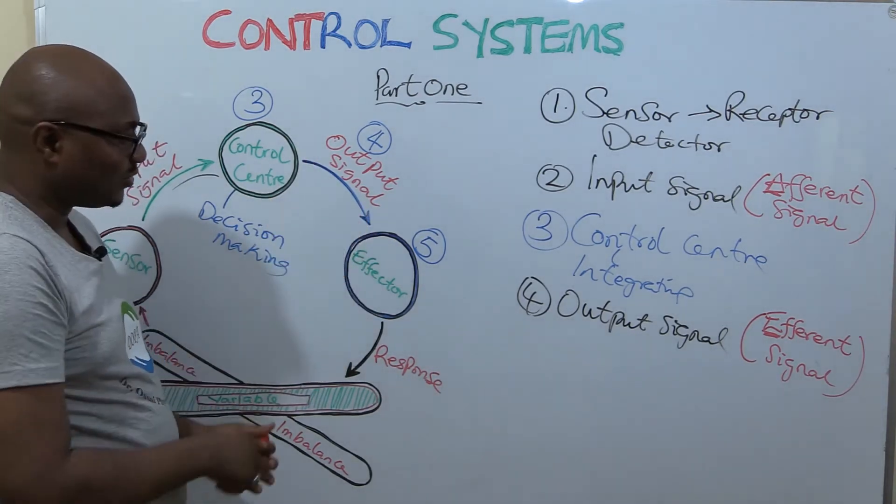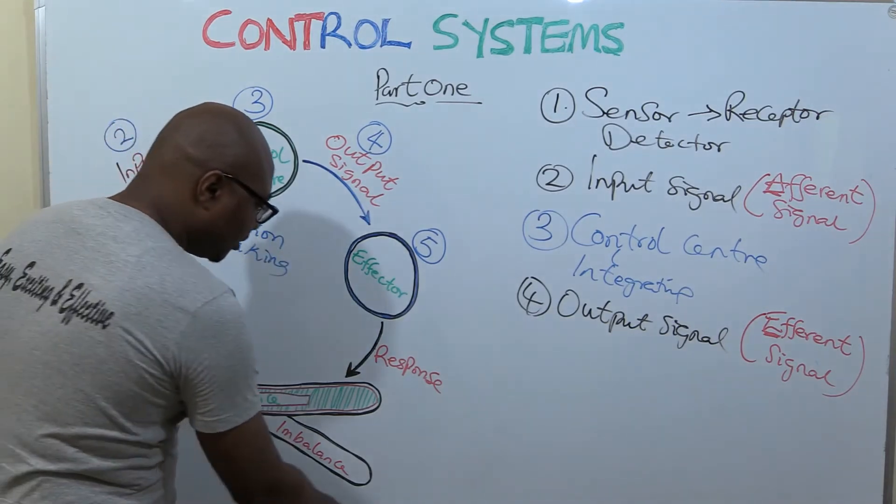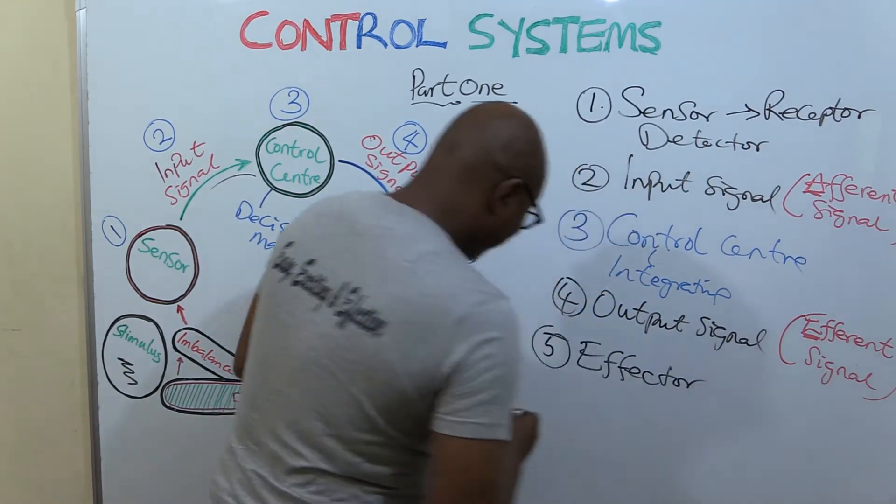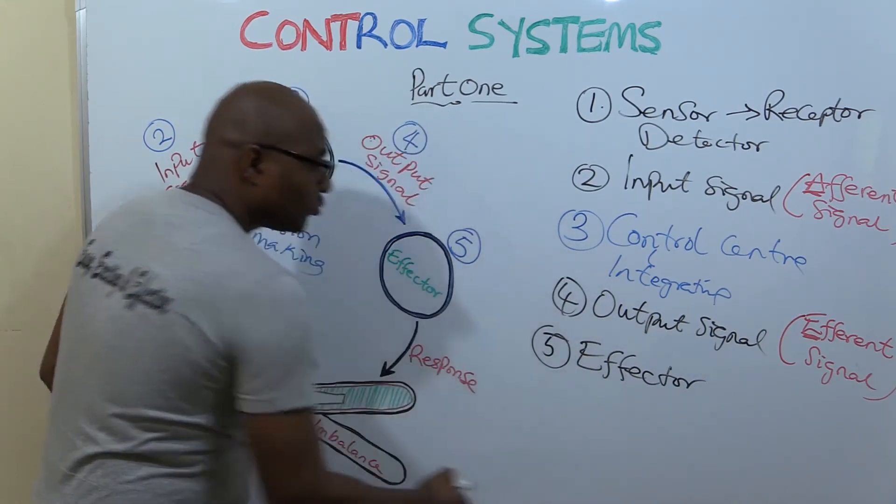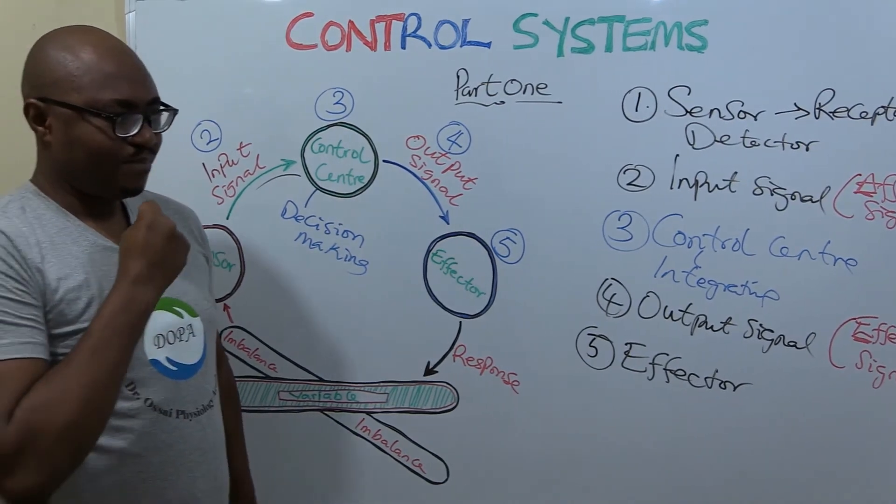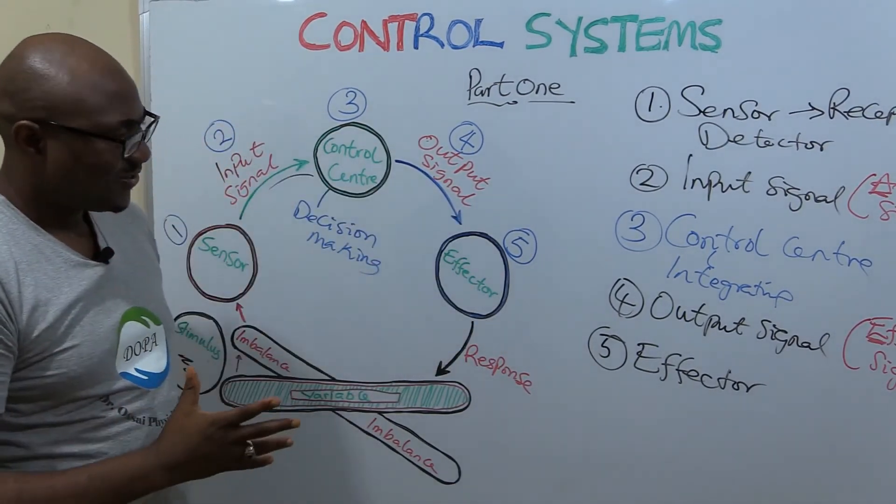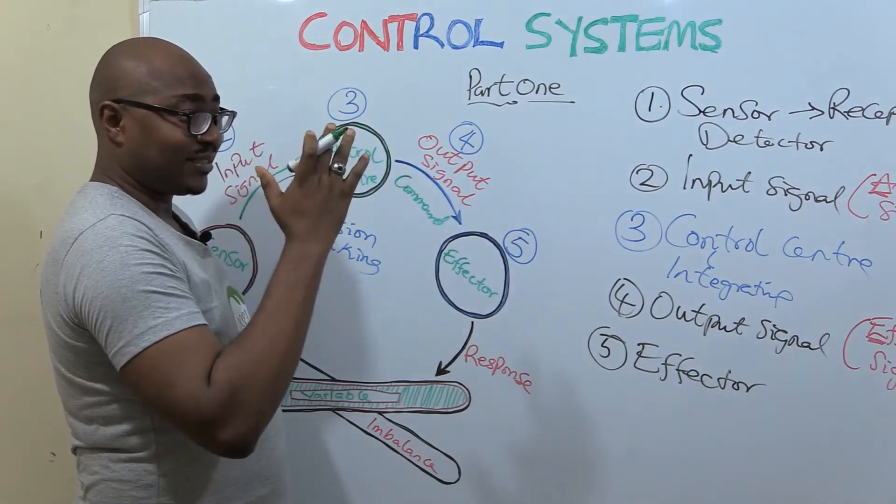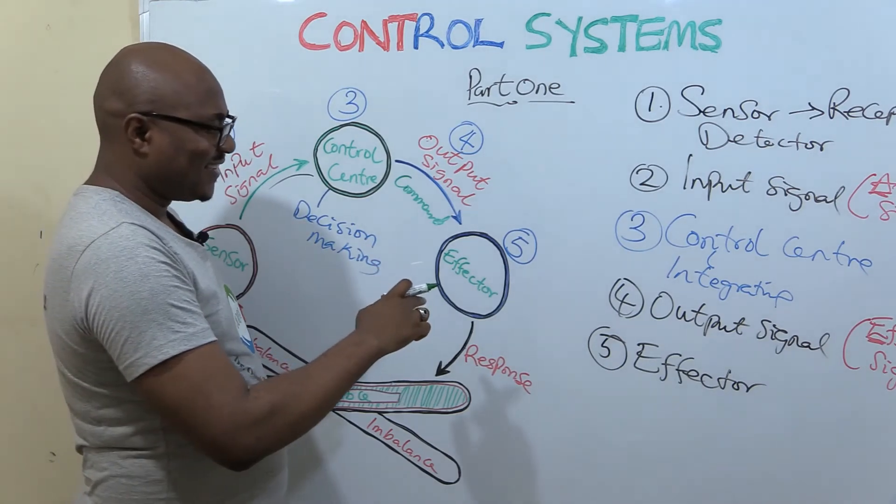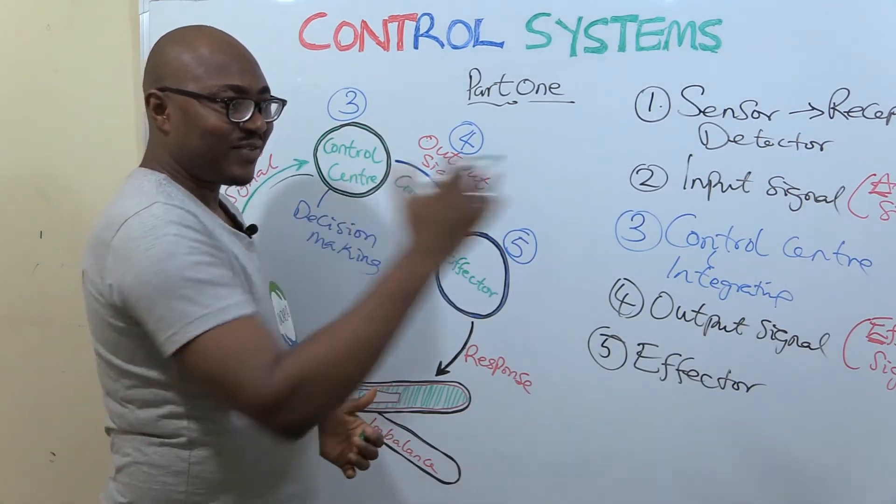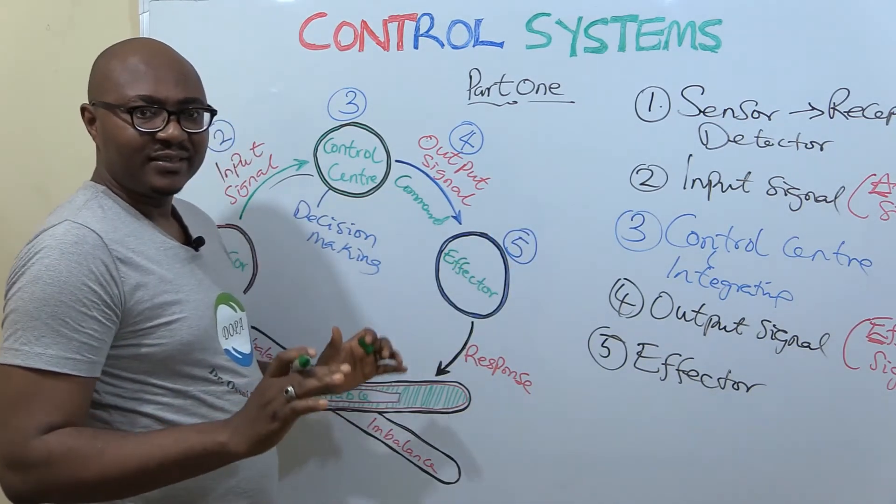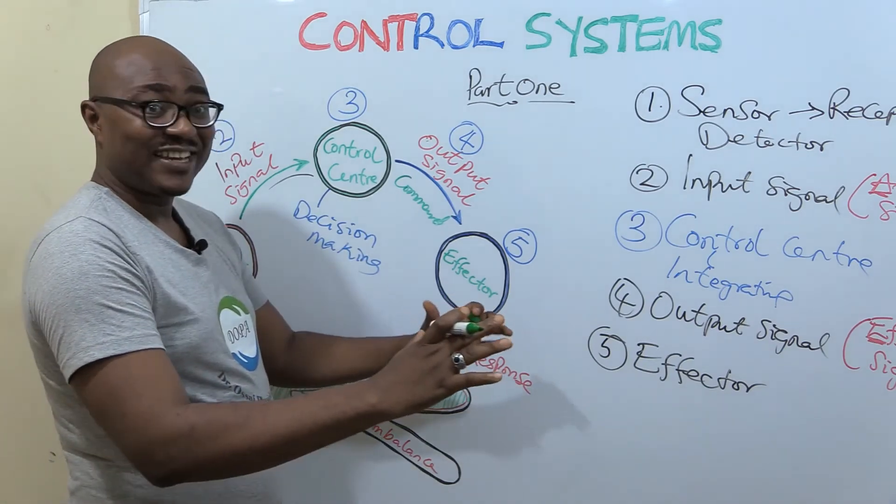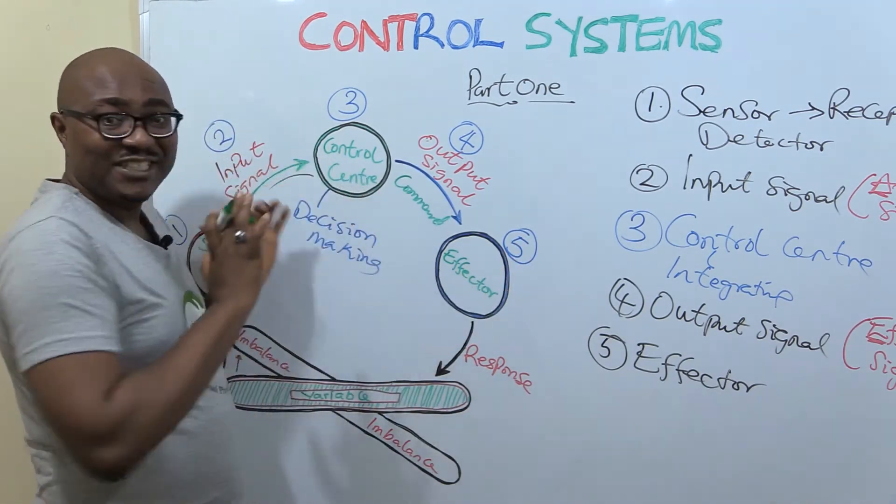and final component of the control system. It's called effector. Number five: effector. Now very important - what does the effector do? The effector is the implementer of the command. Remember that this thing that's coming here is a command: 'Do this thing, change it to this level, change it back to this level.' So it's receiving, just like the parent will give a command to the gateman or house help and say, 'Do this, go and close the gates, don't allow anybody to go out.' That is the effector - the one that implements the command after decision has been taken.